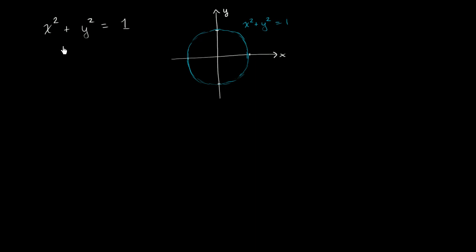So we've got the equation x squared plus y squared is equal to 1. I guess we could call it a relationship. And if we were to graph all of the points x and y that satisfy this relationship, we get a unit circle like this.